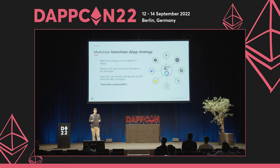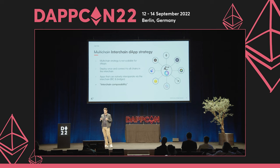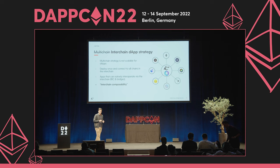Opposed to a multi-chain dApp strategy, we think that in the future this strategy of deploying into multiple EVM-compatible chains is not going to be able to scale, because the number of EVM-compatible chains has only been increasing. So ideally you should only be deploying once to a chain and then connecting to all the other EVM-compatible networks and the interchain ecosystem.